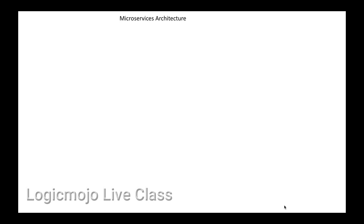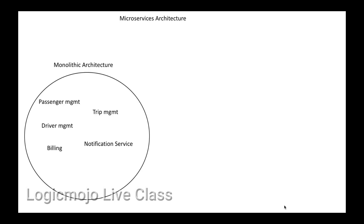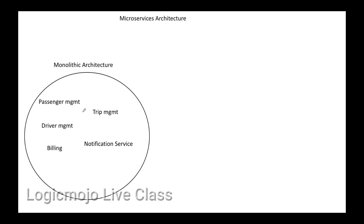Uber started with a monolithic architecture. In a monolithic system, all different modules — like passenger management, trip management, driver management, notification service, and billing — are integrated with each other. It's a highly tightly coupled model where one module is completely dependent on another, so if any issue comes in one module, other modules also get affected.